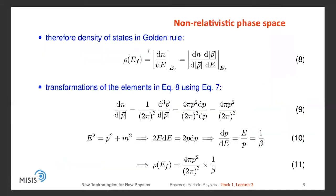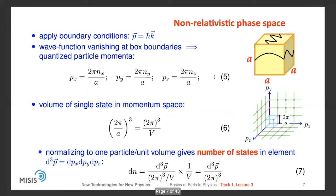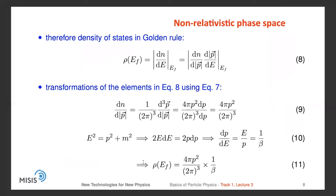We can transform the elements dn/dp and dp/dE using the previous expressions. We can easily compute dn/dp to get the expression for dn/dp. Then, remembering that E² = p² + m², we get dp/dE = 1/β. Finally, the density of states is proportional to p² and inversely proportional to the velocity β of the particle.